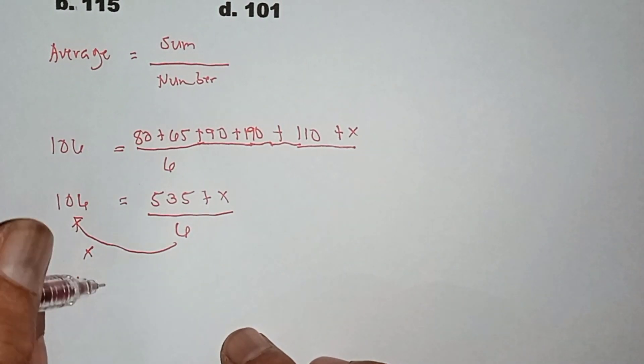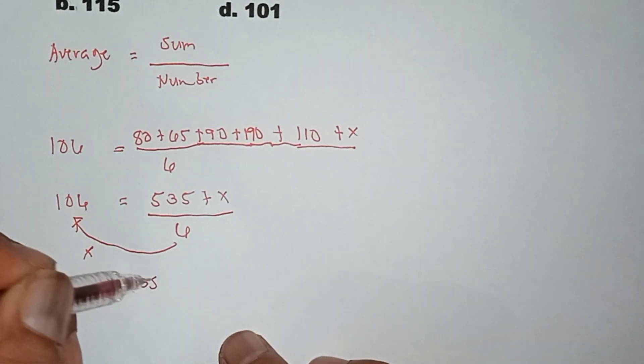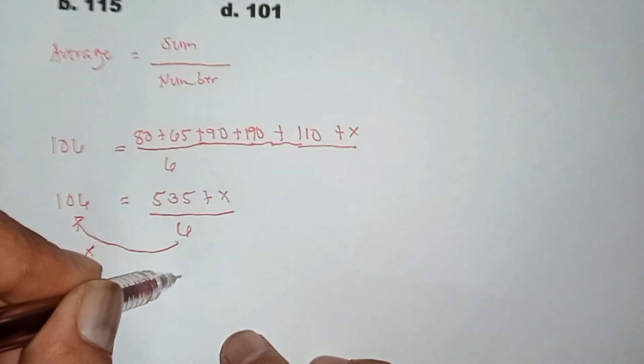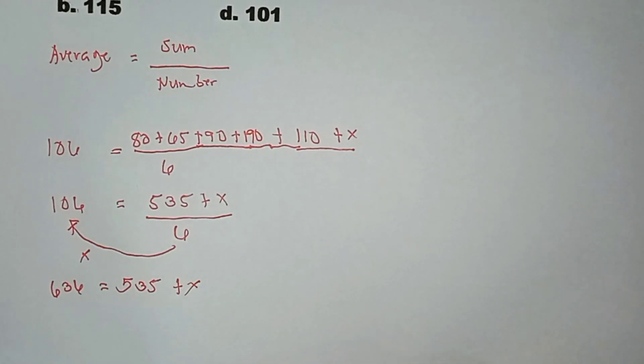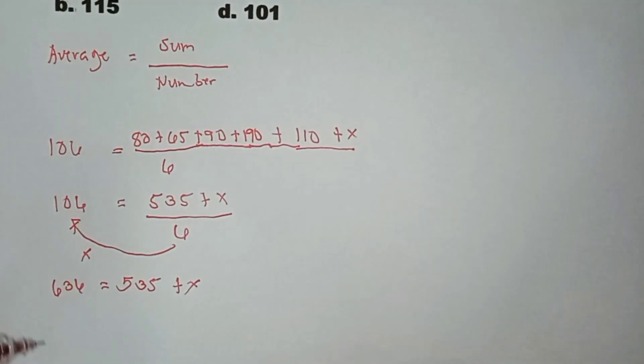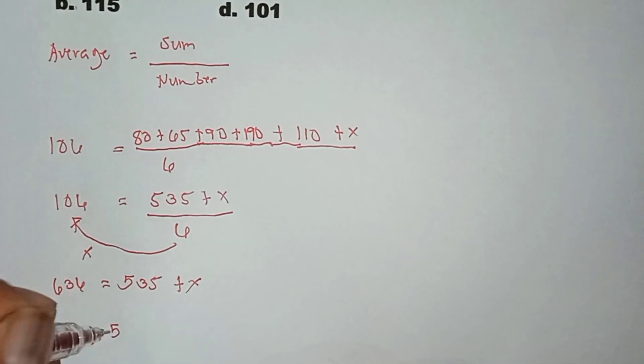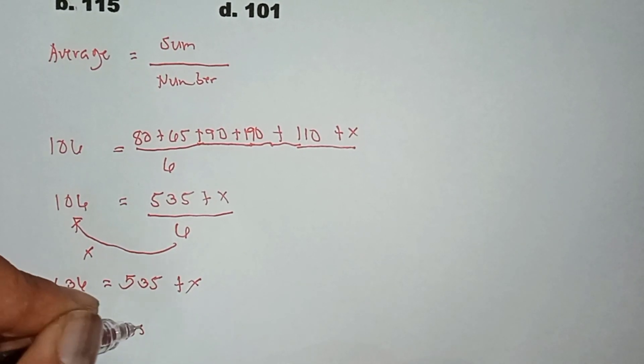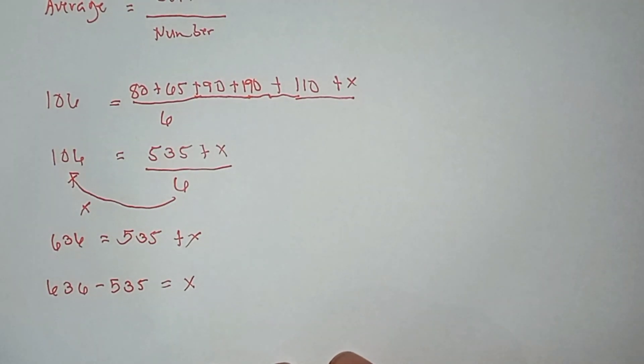636 equals 535 plus x. Okay, to solve this, magto-transpose si 535 dito sa kabila. So, 636 minus 535 equals x. Yan yung magiging equation natin.